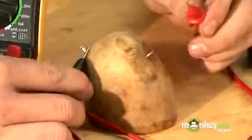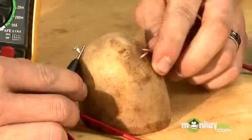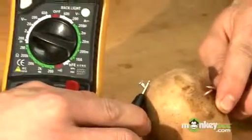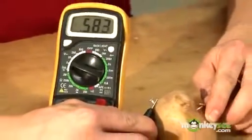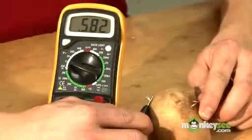If we attach the black one to the cathode and the red one to the anode, we'll see that we're producing a good bit of voltage, and in this case we're producing about 0.58 volts.